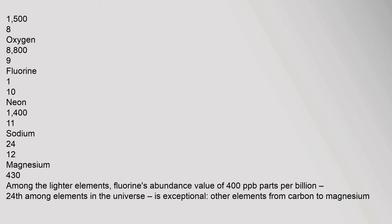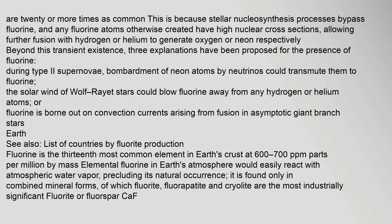Among the lighter elements, fluorine's abundance value of 400 parts per million makes it 20 or more times less common than nearby elements like oxygen (8,809) or neon (1,411). This is because stellar nucleosynthesis processes bypass fluorine, and any fluorine atoms otherwise created have high nuclear cross sections, allowing further fusion with hydrogen or helium to generate oxygen or neon respectively.